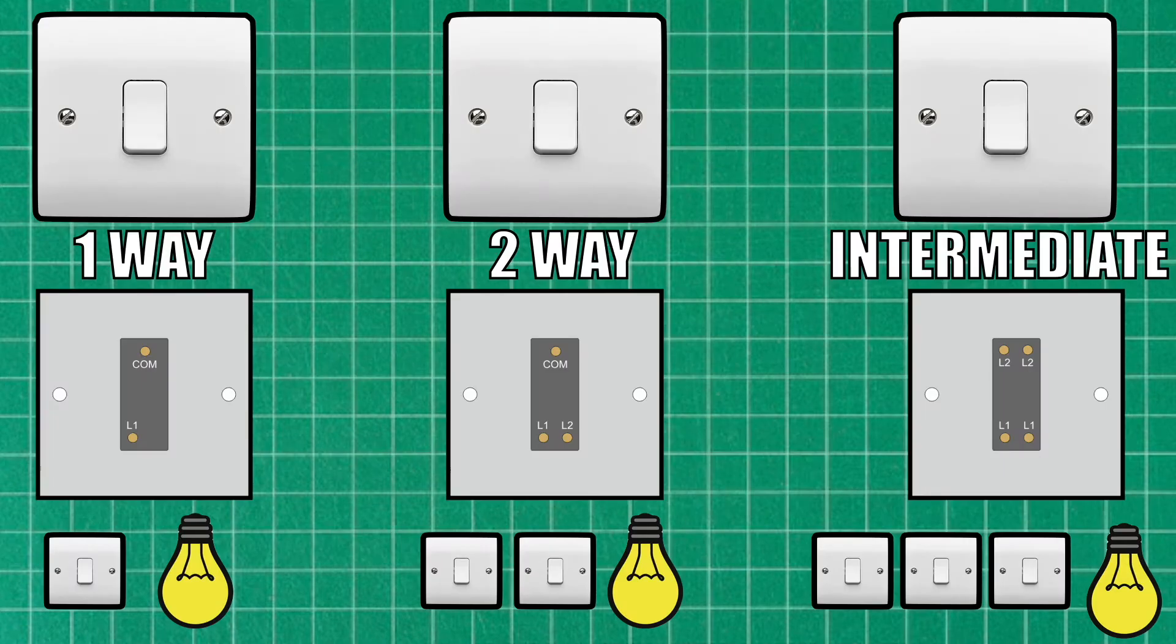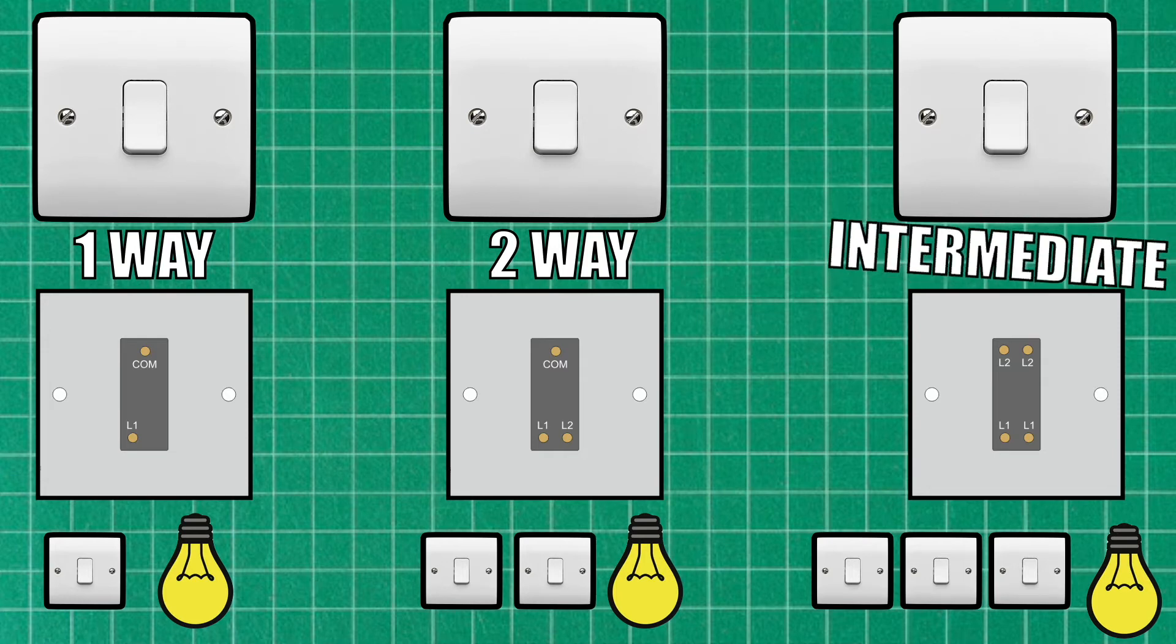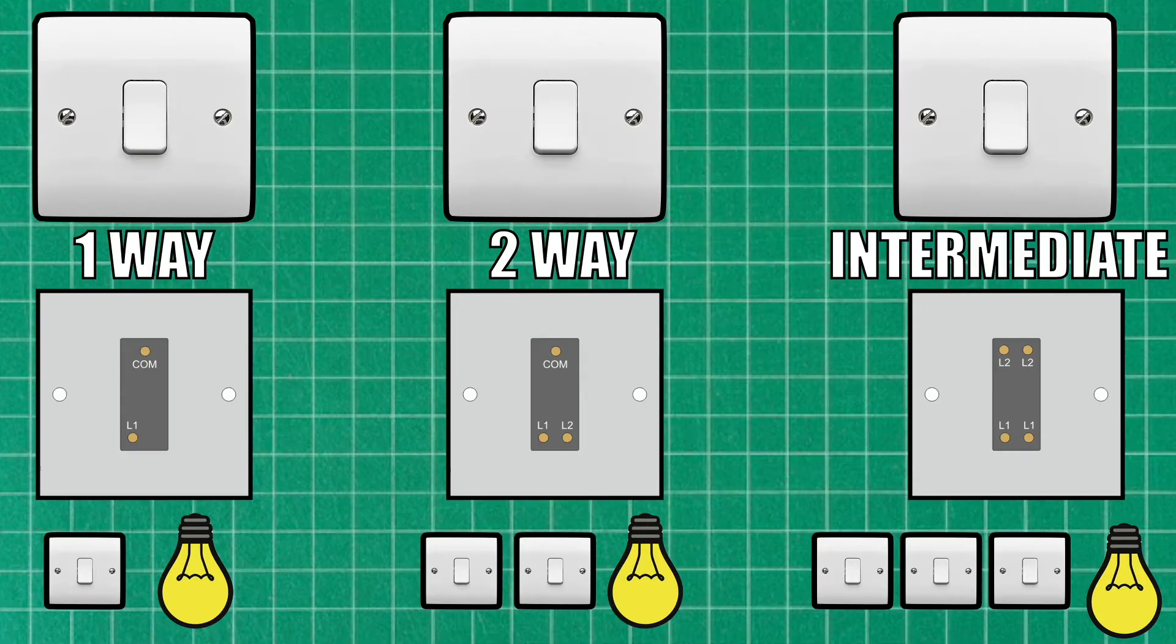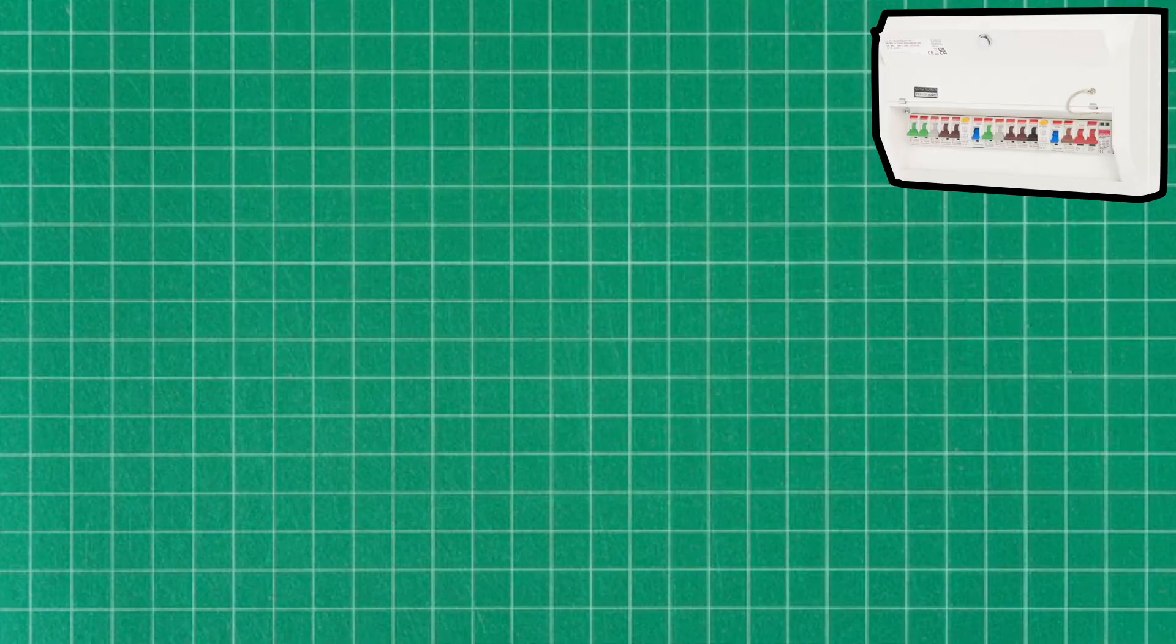So now if we take a look at these three switches, they all look the same from the front - they're all one gang switches. However, as you can see from the backs of these switches, they're different. So the one-way switch has two brass terminals, a common and an L1, and it allows us to connect one switch to one light. The two-way switch has three brass terminals at the back: a common, an L1, and an L2, and so this allows two switches to control that same light. And the intermediate switch has four brass terminals at the back and allows you to connect three or more switches to the same light.